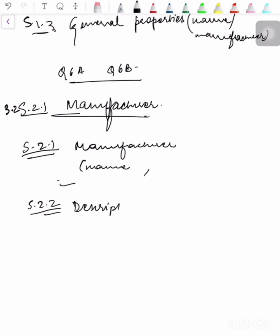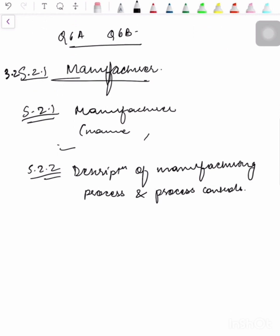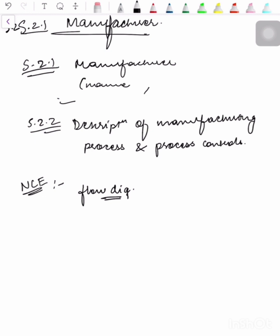The description of the drug substance manufacturing process represents the applicant's commitment for the manufacture of the drug substance. Information should be provided to adequately describe the manufacturing process and process controls. For a new chemical entity, a process flow diagram for the synthesis should be provided that includes molecular formula, weights, yield ranges, and chemical structures of starting materials, intermediates, reagents, and drug substances reflecting stereochemistry.